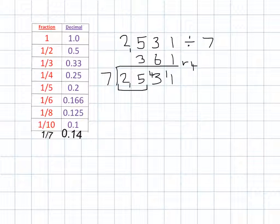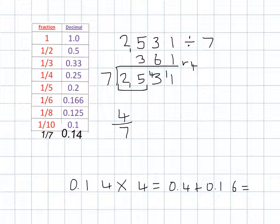Now, this is more difficult because you've got 1 seventh equaling 0.14, so you need to multiply that 0.14 by the remainder of 4. So remainder of 4 means we've got 4 sevenths. What I need to do is do 0.14 multiplied by 4. If I multiply 0.1 by 4, I'll have 0.4. And if I multiply 0.04 by 4, I'll have 0.16. And if I add those two together, I'll have 0.56. So 4 sevenths is the same as 0.56. Therefore, 2531 divided by 7 will give me an answer of 361.56.